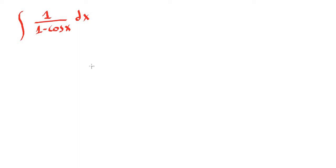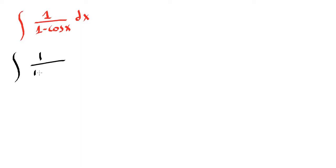Hello everybody. In this video we're going to integrate 1 over 1 minus cosine of x. Our first step is to multiply both top and bottom by the conjugate of the denominator — so 1 over 1 minus cosine x times...